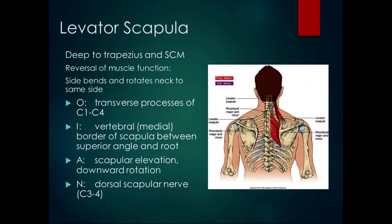The levator scapula is deep to the trapezius and the sternocleidomastoid. It's a scapular elevator and functions in the force couple for downward rotation. Because it has a similar line of pull to the upper trapezius, you might wonder how one does upward rotation and the other does downward — it's the other muscles on the team that help determine the resultant rotation.